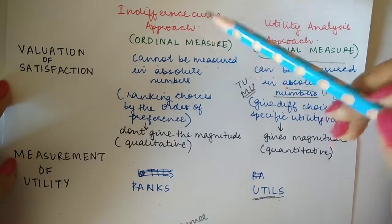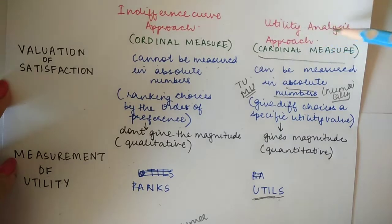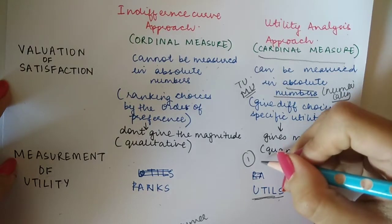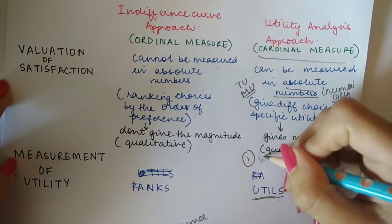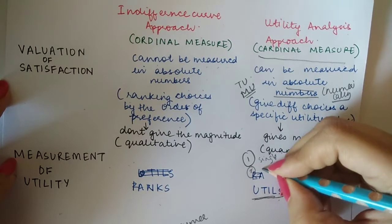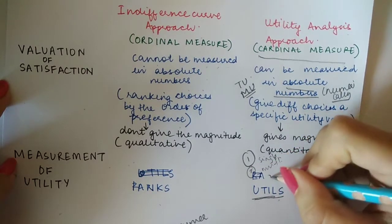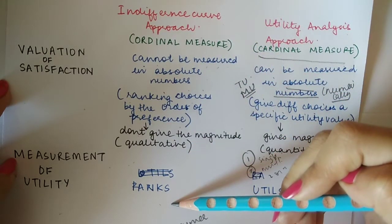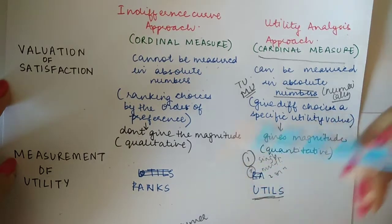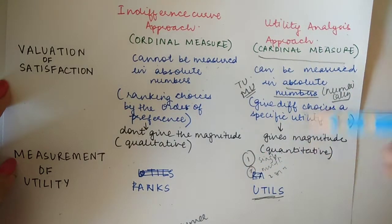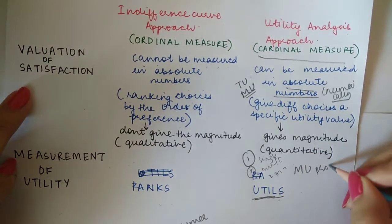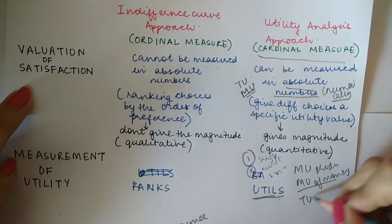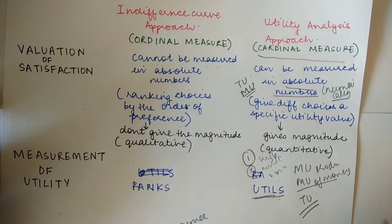In the indifference curve approach we always assume the consumer consumes two commodities. In the utility analysis approach, one model talks about single goods equilibrium and another talks about multiple goods equilibrium with two or more commodities. The indifference curve approach requires knowledge of indifference curves, budget lines, and the indifference map. The utility analysis approach requires the concepts of marginal utility of a product, marginal utility of money, and total utility.